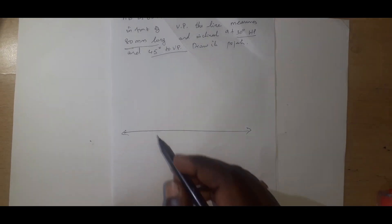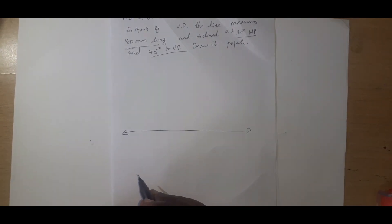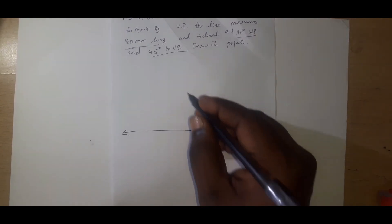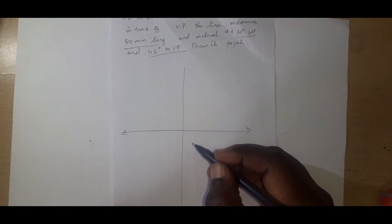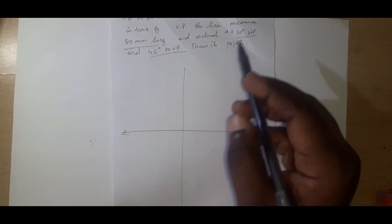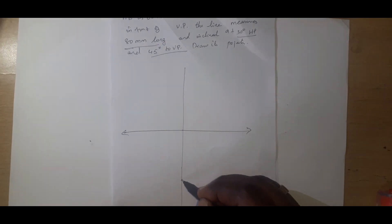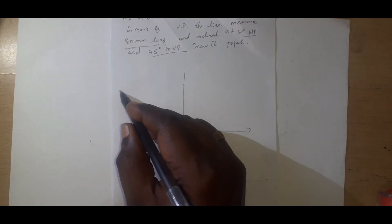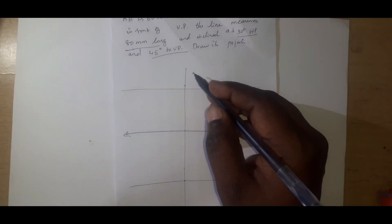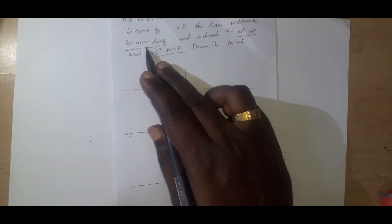It is very simple. Unlike the previous problem where we draw one end projection line and find the other end, here we draw a center projection line — a midpoint projection line. We mark 50mm in front and draw a locus, and 60mm above and draw a locus on it.